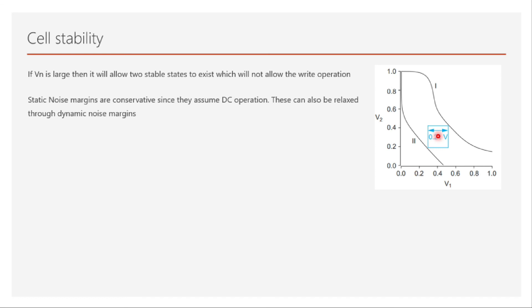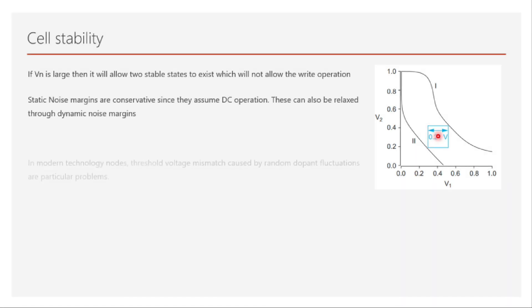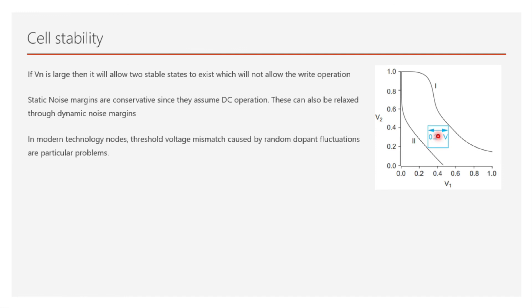Static noise margins are more conservative than reality. They assume DC operation, constant noise sources, access transistors that are indefinitely on, and bit lines remaining at their full pre-charge level. These assumptions can be relaxed to define a larger dynamic noise margin, which can be used for very difficult designs.